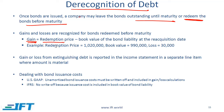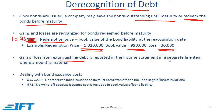The gain or loss equals the redemption price minus the book value of the liability at the reacquisition date. For example, if the redemption price is 1,020,000 and the book value is lower, it is a loss because the amount being paid is more than the book value — more cash is going out, so the loss is 30,000. The gain or loss from extinguishing debt is reported in the income statement as a separate line item where the amount is material.